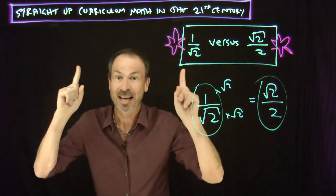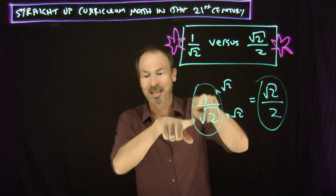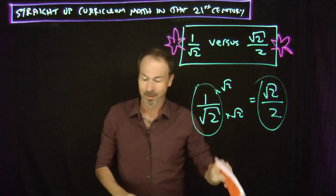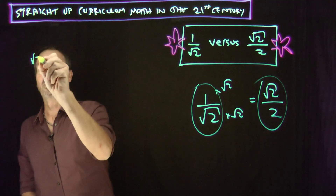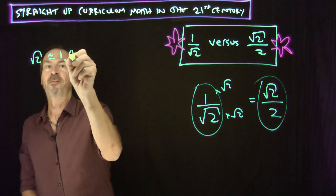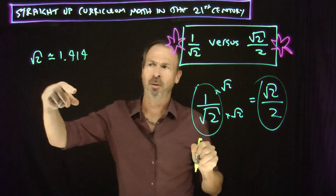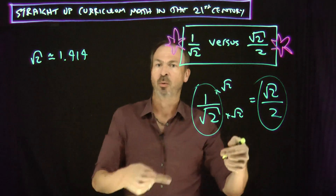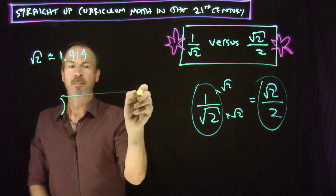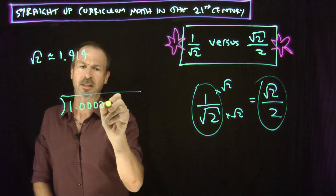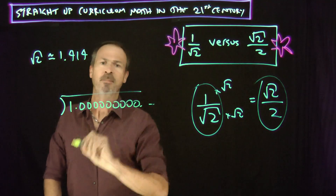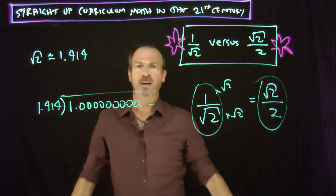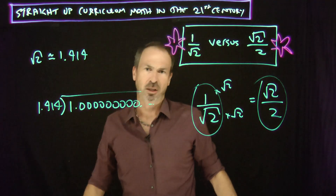If you need this answer as a decimal, here's what you have to do. First of all, square root of 2 — look it up in your booklet, and you'll see the square root of 2 is about 1.414. All my booklets went to three decimal places, probably good enough. Then to work out 1 divided by the square root of 2, what I'd have to do is take 1, with lots of zeros for accuracy, divided by square root of 2 — which is about 1.414 — and off I would have to go and do a long division problem.